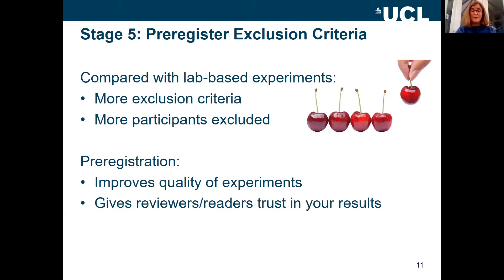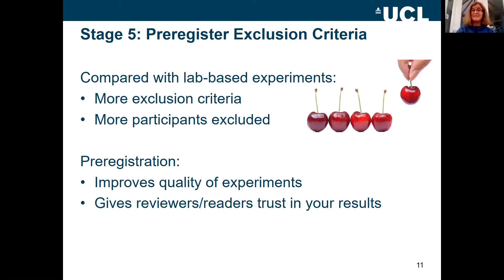Pre-registering your criteria improves the quality of your experiment because it makes you take time to think about your exclusion criteria. In my experience, if you do it before you collect data you take your time and do it properly. If you do it when you've got a lovely juicy data set you want to analyse, you tend to rush through it. By doing it ahead of time you improve the quality of your science, and you also give your readers and reviewers trust in your results — that you've not been cherry-picking participants who conformed to your predictions, but selecting them on the basis of predefined data quality criteria.